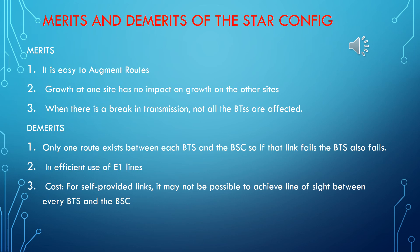In terms of disadvantages, only one route exists between each BTS and the BSC — if that link fails, the BTS also fails. There is also inefficient use of E1 links. In terms of cost, for self-provided links it may not be possible to achieve line of sight between every BTS and the BSC. It can also be very costly because you have to spend a lot of money connecting many E1s to various BTSs in the network.